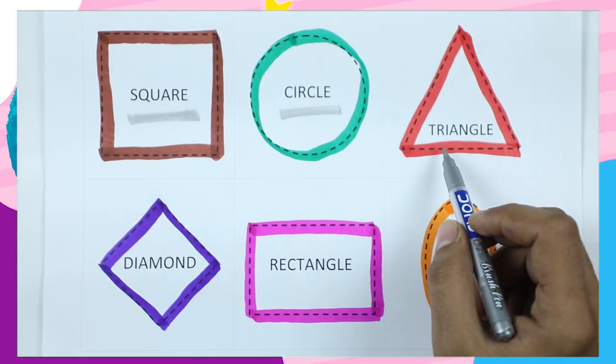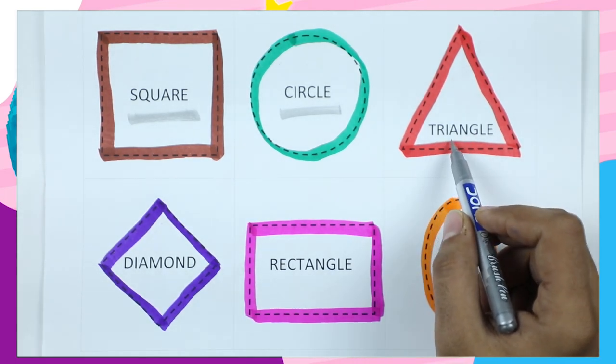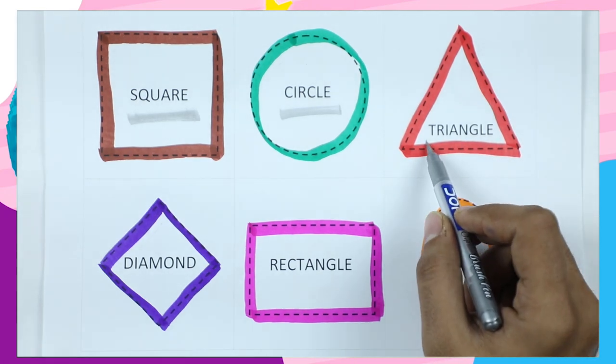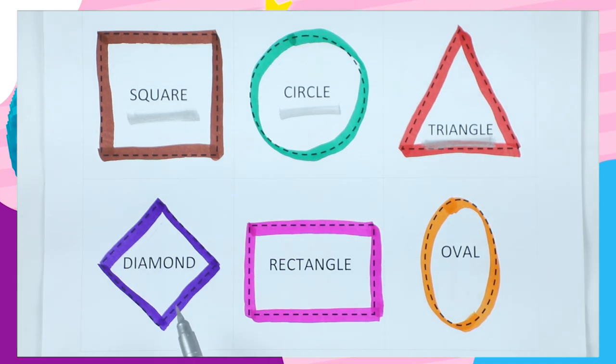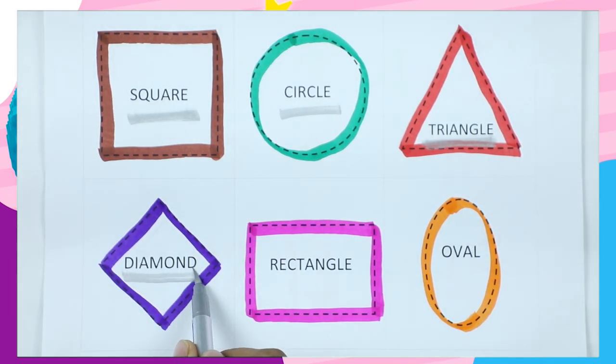Which shape is this? Triangle. T-R-I-A-N-G-L-E. It's a triangle with red color.